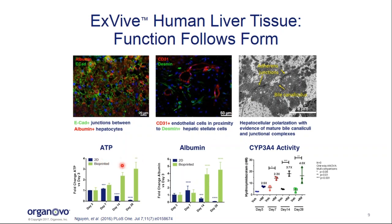Across the bottom is characterization data showing the longevity of the tissue. We monitor ATP for overall cell viability, albumin secreted into the supernatant from hepatocytes, and metabolic activity by giving tissues a CYP3A4 substrate and measuring production of hydroxymidazolam. With all three readouts, in the bioprinted context, we have good sustained function and viability going out at least to four weeks — whereas equivalent donor hepatocytes in standard 2D culture tend to peter out over a couple of weeks. On the metabolic side, we get sustained basal CYP3A4 function as well as sustained inducibility by rifampicin out to 28 days.